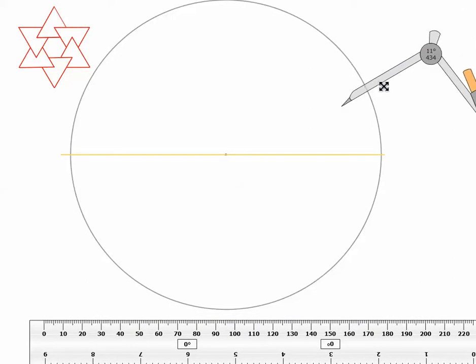Then, without allowing your compass setting to change, you're going to place the compass point at the intersection of your diameter and your circle.